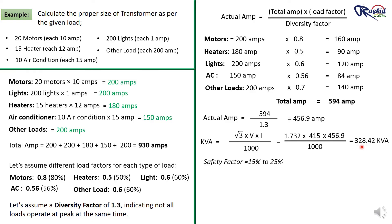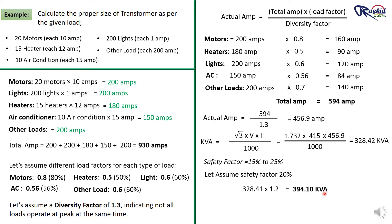We will add a 15–25% safety factor to ensure efficiency and safety of the transformer. Assuming a safety factor of 20%: 328.41 × 1.2 = 394.10 KVA. Since a 394.10 KVA transformer is not available in the market, we choose the next bigger standard size, which is 500 KVA. So the suitable transformer size for these loads is 500 KVA.